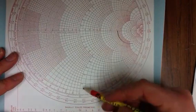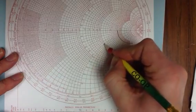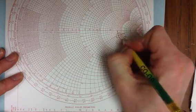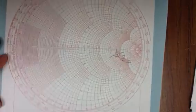J1 is here, so this is the load impedance. So we've plotted the impedance.